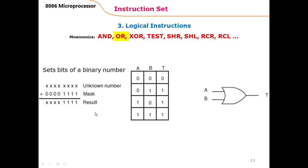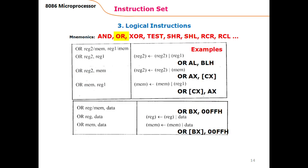In the OR operation, wherever there is a one in the mask, the corresponding bit in the unknown number is changed to one; if there is a zero, the corresponding bit is unchanged. So these x-bits in the unknown number remain unchanged, while bits against ones are set to one. Just like AND, the OR instruction is available in different forms — both operands can be registers or memory locations, but not both memory at the same time.